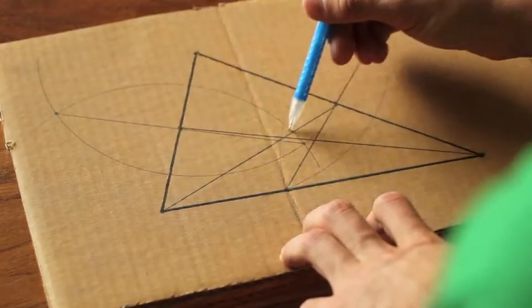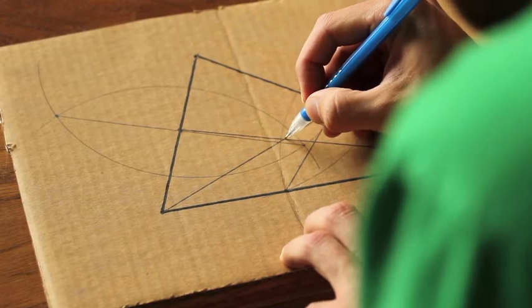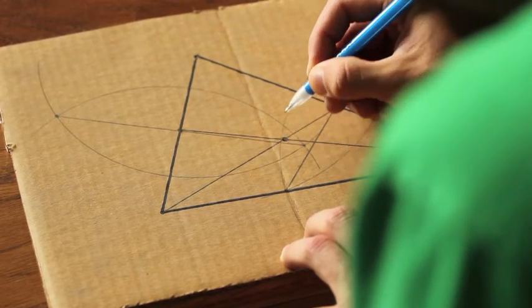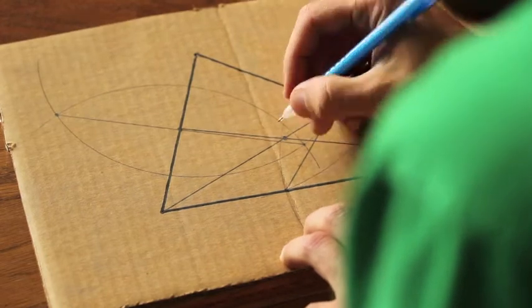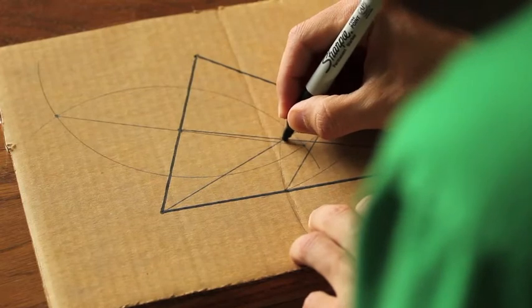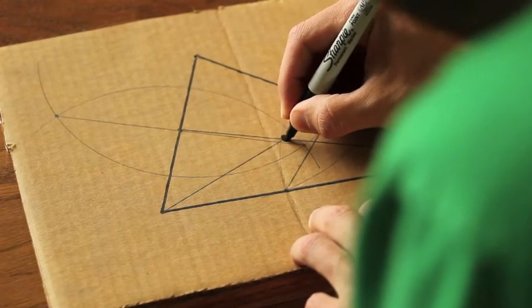And where those two medians intersect, it's kind of hard to see, is right here. We know that the medians of a triangle are concurrent, so we don't need to do the third side. We'll know that it intersects there. To make it a little easier to see, I'll do a big dot right there. That's the centroid.